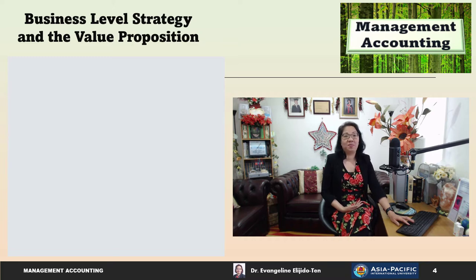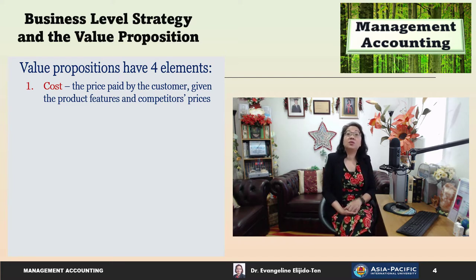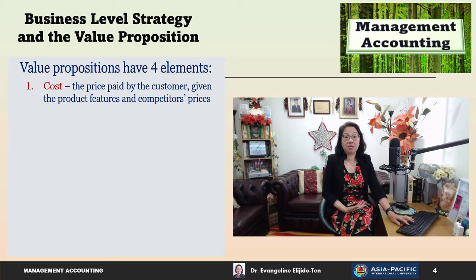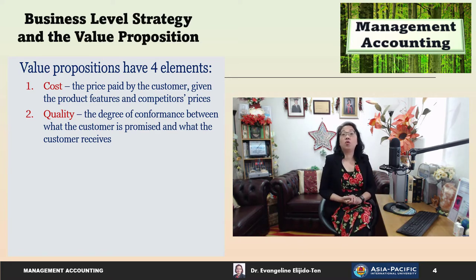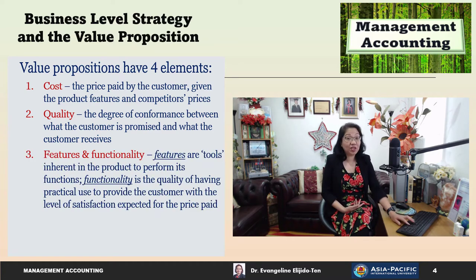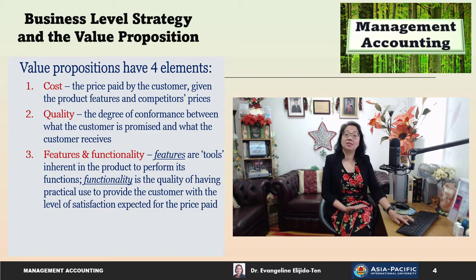A value proposition has four elements. The first is cost — the price paid by the customer given the product's features and competitor prices. The second is quality, which is the degree of conformance between what the customer is promised and what the customer receives. The third is features and functionality: features are tools inherent in the product to perform its functions, whereas functionality is the quality of having practical use to provide the customer with the level of satisfaction expected for the price paid.